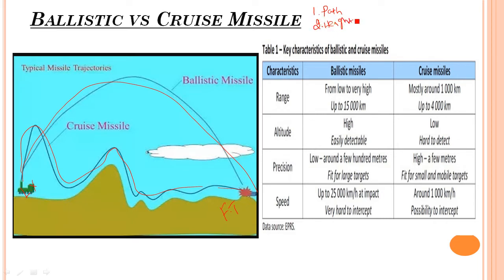The first key difference is height. The height of the ballistic missile is very high — it goes out of the atmosphere to reach the target. But the cruise missile flies at a very low altitude, traveling within the atmosphere. This is a very important difference.